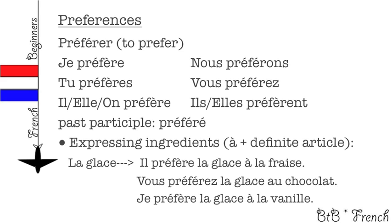It is also important that you know how to express ingredients. One can express ingredients by adding à plus a definite article. An example is by describing one's preference for ice cream. Il préfère la glace à la fraise — He prefers strawberry ice cream. Vous préférez la glace au chocolat — You prefer chocolate ice cream. Je préfère la glace à la vanille — I prefer vanilla ice cream.